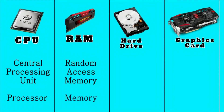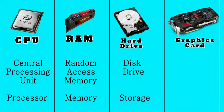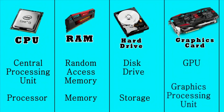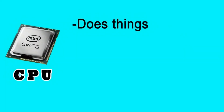We can see the memory and hard drive. This drive is for storage — data storage. We can see the GPU, which stands for Graphics Processing Unit. Data storage is low.